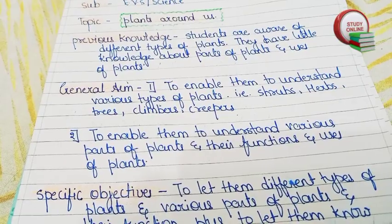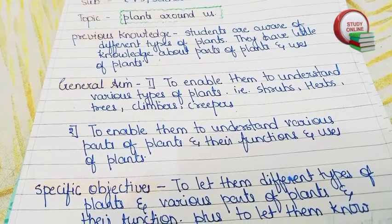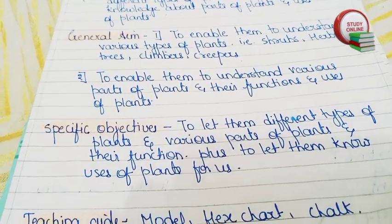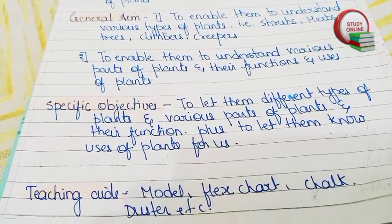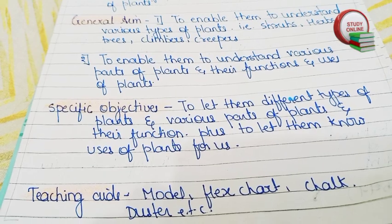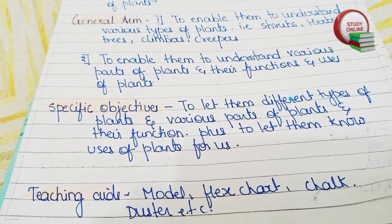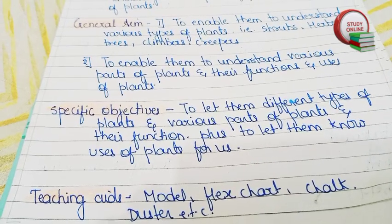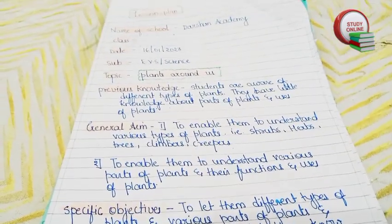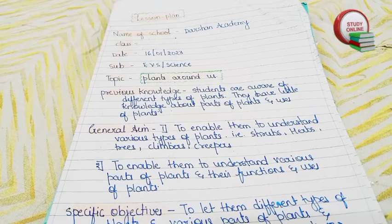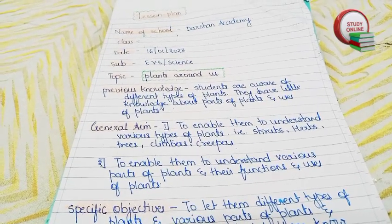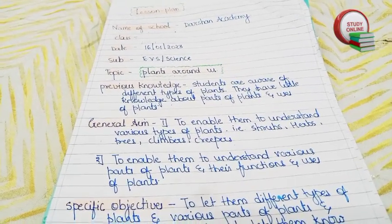We want to teach students all those things, and you can mention all of them here. For specific objectives, you can see I have written here what we want to teach them about parts of plants and functions of each part. For teaching, we also have to write what teaching aids we are going to use while teaching. Here you can see the overall look of our lesson plan.